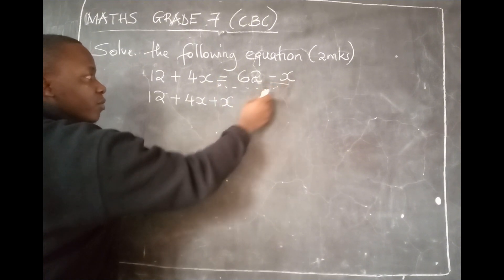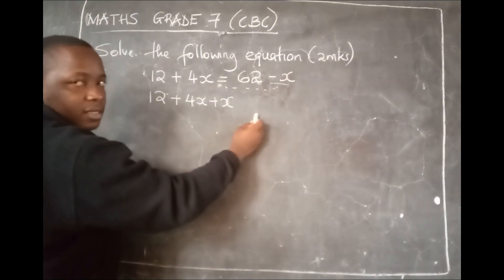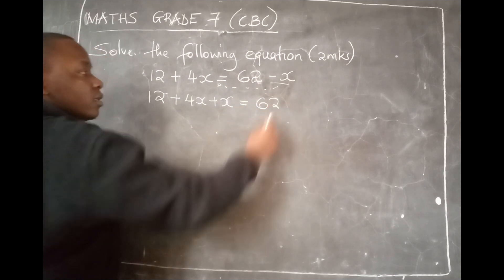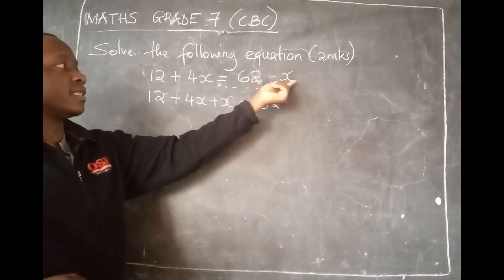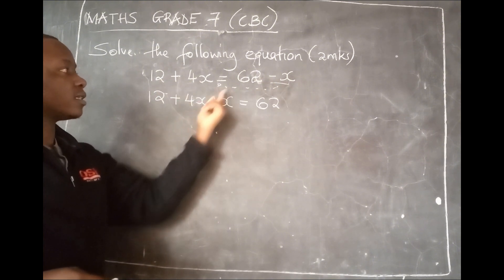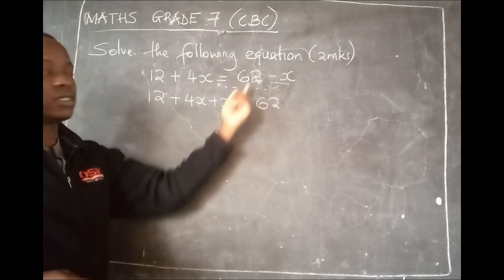So it will be 12 plus 4x plus x. Because this is minus, it becomes plus x. Now, because we have brought it here, this x is out. So it is equal to 62. We don't put this minus x because we already brought it here.